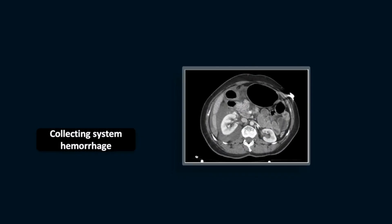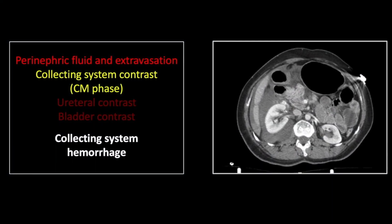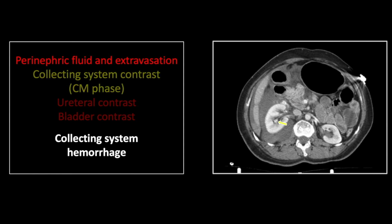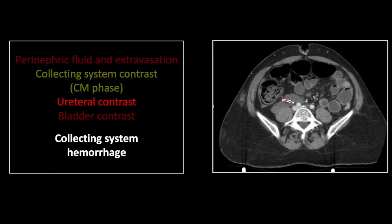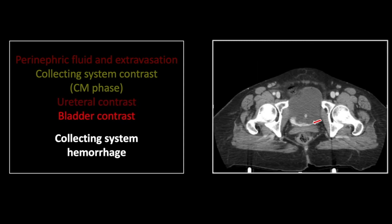Our next case is a variation of that — arterial hemorrhage into the collecting system, a different thing altogether but similar in appearance. You can see there is perinephric extravasation consistent with a laceration and a good deal of right perinephric fluid. Note also there is a hyperdense focus within the collecting system of the right kidney, yet the kidneys are not in the excretory phase, suggesting this hemorrhage is coming from an arterial source. There is contrast within the right ureter as well, a great deal of periureteral fluid, and dependent contrast within the bladder.